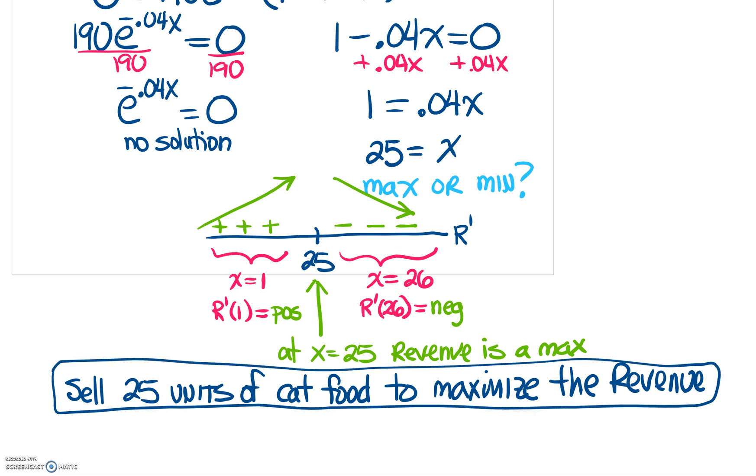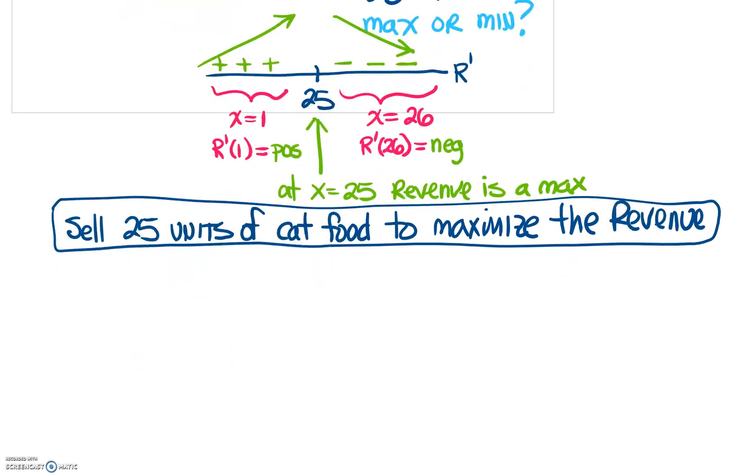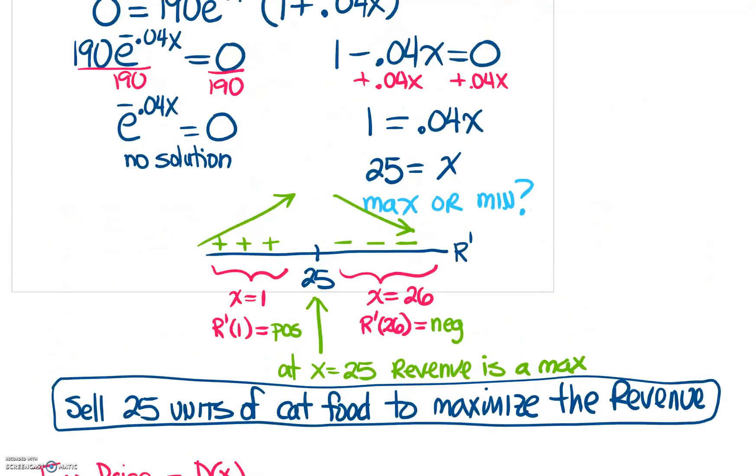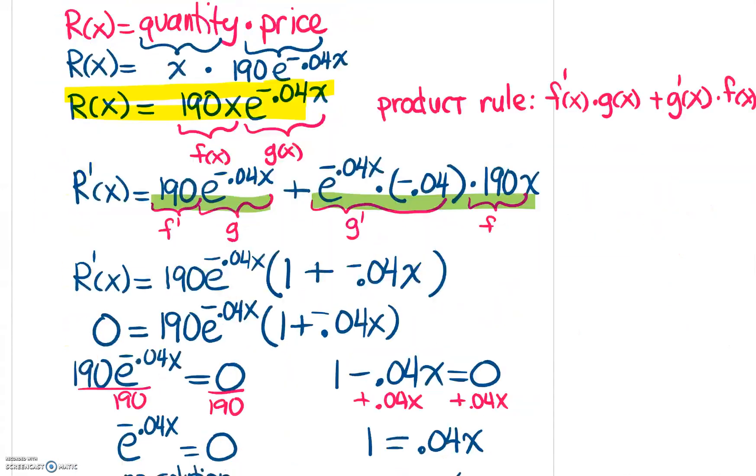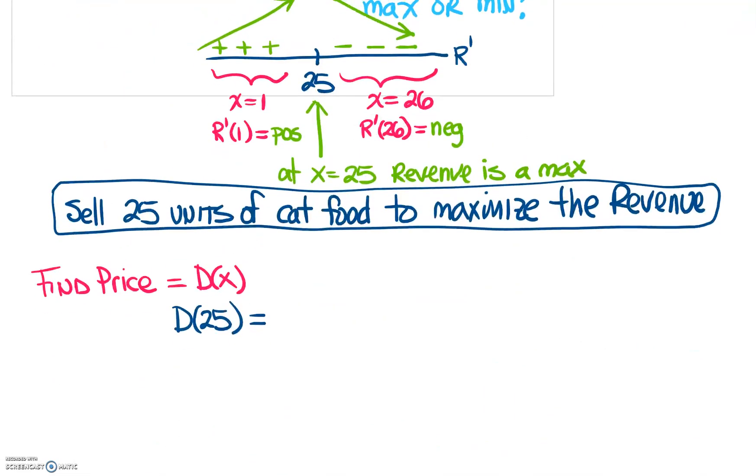So the last question was determining the price. Now, we have an equation that gives us the price. So if we want to find the price, that's what we're going to use is that equation. And remember, the price was D of X. So we're going to need to take our X value of 25 and plug it in the price function. So what we need to do is find D of 25. So we're going to plug that into our demand function. So way back up here, let me go get that demand function again. That was from our original. Remember, we set down the price was 190E to the negative 0.04X. So it's going to be 190E, negative 0.04, times X, which X is 25.